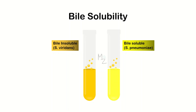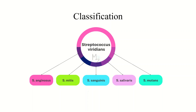Streptococcus viridans is bile insoluble, while Streptococcus pneumoniae is bile soluble. Streptococcus viridans is not a single bacterium — it is a group. The important species include Streptococcus anginosus, Streptococcus mitior, Streptococcus sanguineus, Streptococcus salivarius, and Streptococcus mutans.